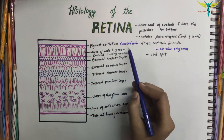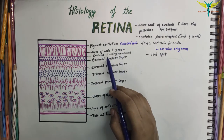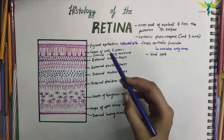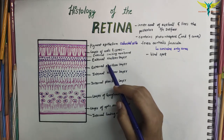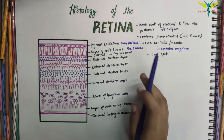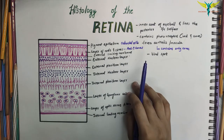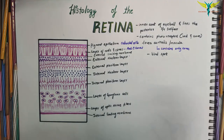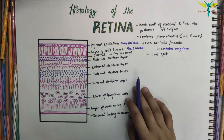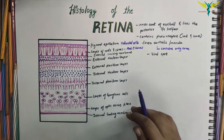The second layer is the layer of rods and cones. The peripheral process of rod cells is rod-shaped, and the peripheral process of cone cells is cone-shaped. The external nuclear layer consists of cell bodies and nuclei of rod cells and cone cells. These rods and cone cells are the photoreceptor cells that convert the stimulus of light into nervous impulses.